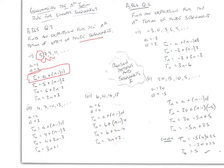We substitute in 5 for a and 2 for d, and we work out that Tn, the nth term rule for this linear sequence, is given by Tn = 2n + 3.